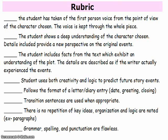Now let's take a look at the rubric, which will also be shared with you in Edmodo and in the Google Drive folder. When I am scoring this writing, I'm looking for writing where the student has taken on the first person voice from the point of view of their chosen character and keeps that first person voice throughout the entire writing. I'm looking for writing that reveals a deep understanding of the chosen character and details that provide a new perspective on the original events — not just repeating what the old man said, but new creative details showing what Diana and Alan's life is like now. I'm also looking for facts from the text that show you understood the plot, and details described as if the writer actually experienced the event, with realistic emotions and voice.